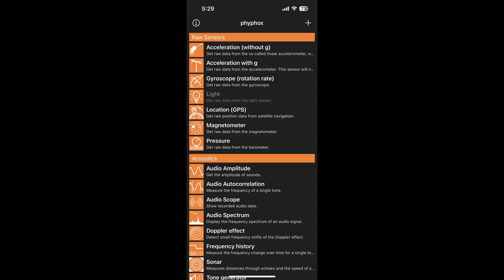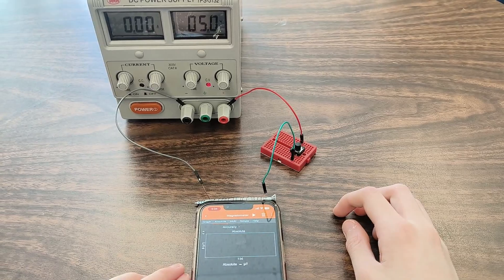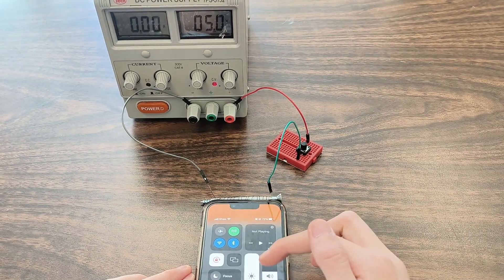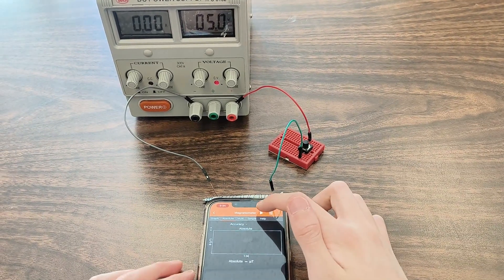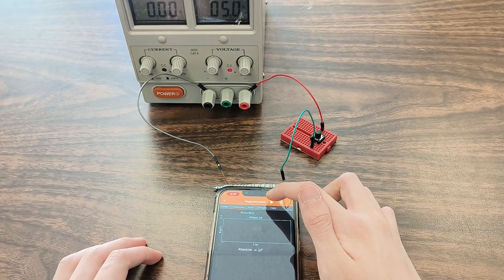In FIFOX, first navigate to the magnetometer, and then click the absolute tab. Turn on the power supply, and place the phone with the top next to the electromagnet. Start the FIFOX recording with the play button.